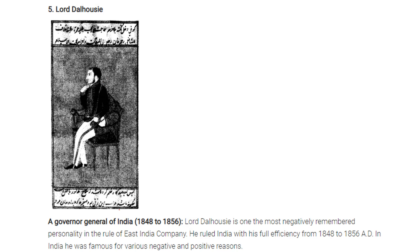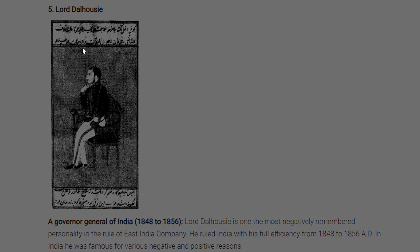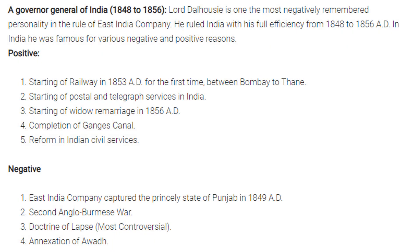Lord Dalhousie was Governor-General of India from 1848 to 1856 and is one of the most negatively remembered personalities of East India Company rule. His positive contributions included starting the railway in 1853 (first between Bombay and Thane), starting postal and telegraph services, introducing widow remarriage, completing the Ganges Canal, and reforming the Indian Civil Services. His negative actions included the capture of the princely state of Punjab in 1849, the Second Anglo-Burmese War, the controversial Doctrine of Lapse, and the annexation of Awadh.